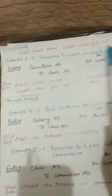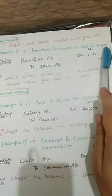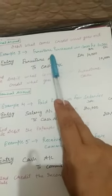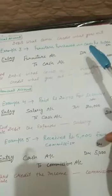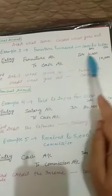Next, real account — debit what comes in, credit what goes out. Example number three: furniture purchased in cash, rupees 10,000. Two accounts are affected: furniture account and cash account. Furniture comes in, so furniture account is debited. Cash goes out, so cash account is credited. Entry: furniture account debit to cash account, 10,000 and 10,000. Debit what comes in — furniture. Credit what goes out — cash.